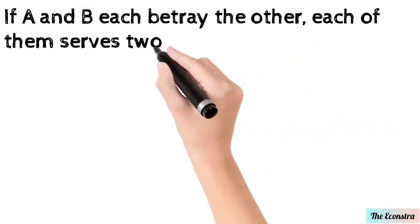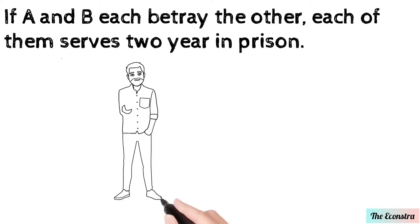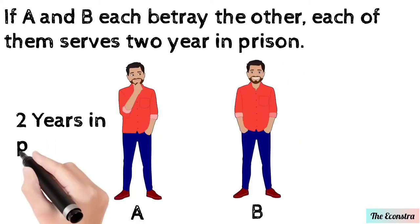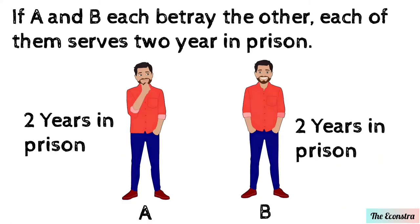If A and B each betray the other, each of them serves two years in jail.